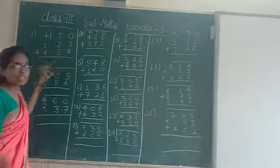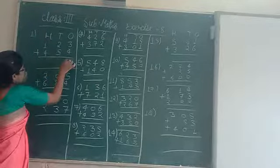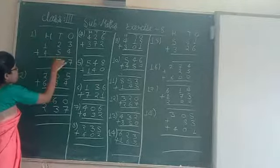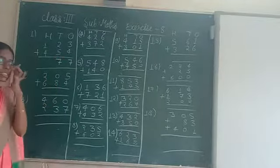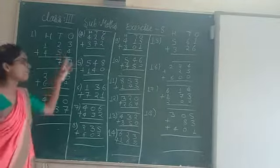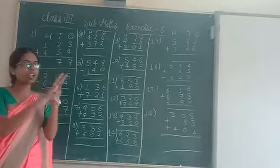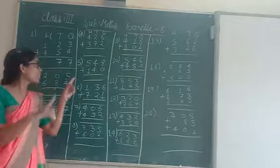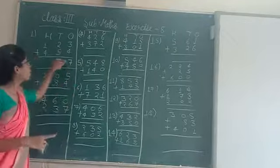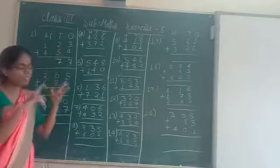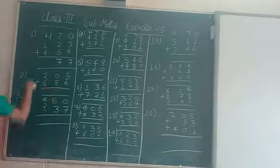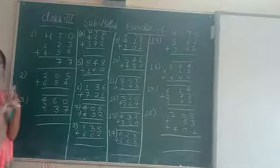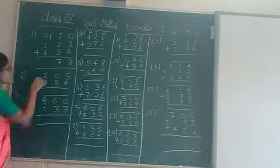3 plus 4 is 7. 2 plus 5 is 7. How are we getting this? For 4 plus 3, take up 3 fingers: 5, 6, 7. Here also: 5, 6, 7. Here also, 4 plus 5 — only 1 more after 4, what number comes? 5.